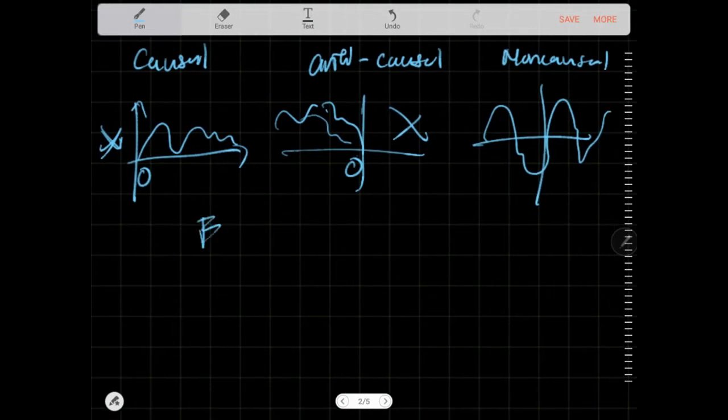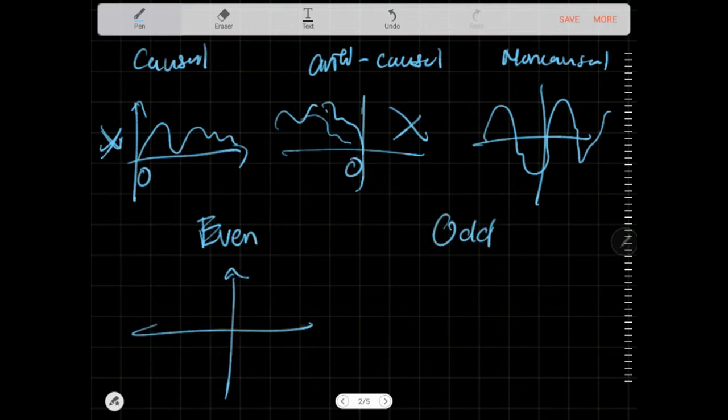Next, we have even and odd signals. Even signals are basically symmetrical on both sides. Let's say there's something here and something here. The distance here to here and here to here are equal. The height is equal. The distance here and here are equal as well. That's why I call it even signals.